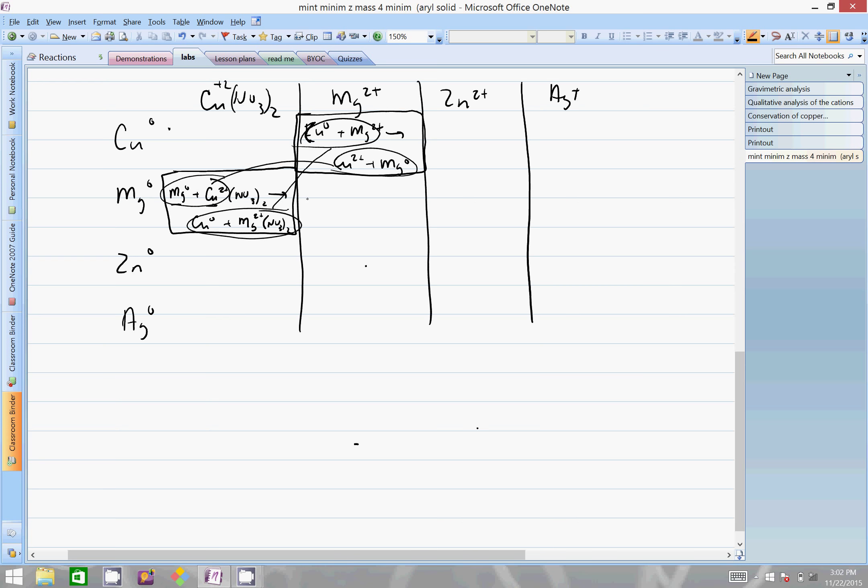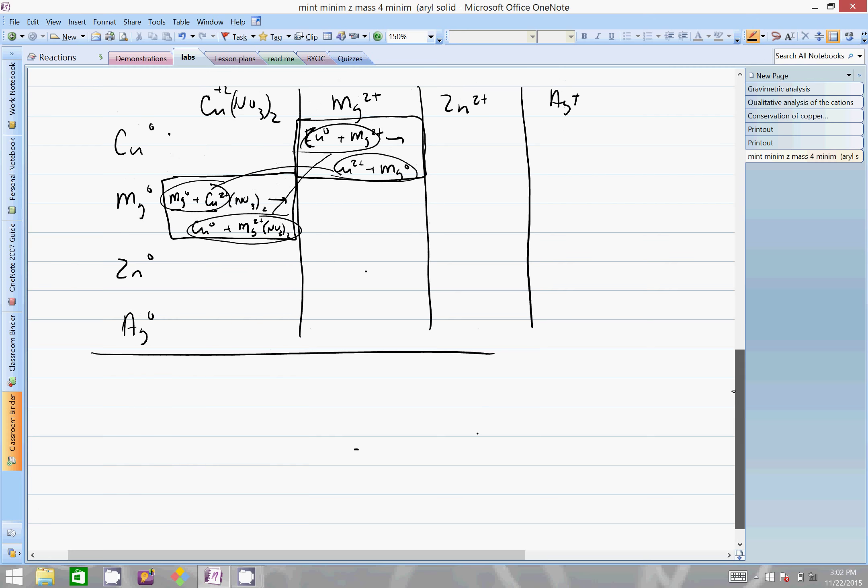I flipped over to a net ionic equation there. The products are the reactants here, and the reactants are the products here, so they are absolutely reverses of each other. I'll show how I would suggest you list these out. We have magnesium metal plus copper 2+ goes to magnesium 2+ plus copper metal.